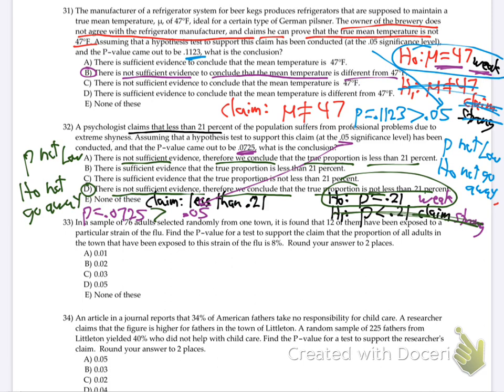All right, you guys look happy. We'll move on to 33. In a sample of 76 adults selected randomly from one town, it is found that 12 of them have been exposed to a particular strain of the flu. Find the p-value for a test to support the claim that the proportion of all adults in the town exposed to the flu is 8%. Round your answer to two places. So we need to set up a hypothesis test on this one.